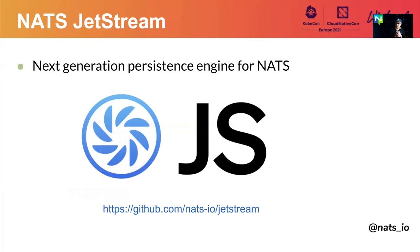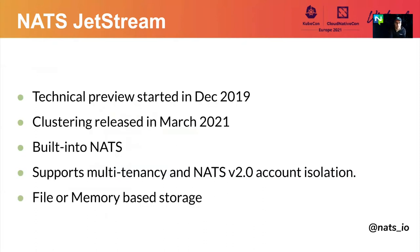As a result, based on all the feedback from the community, we released in the first quarter of 2021 NATS Jetstream, which is the next-generation persistent engine for NATS. You can find all the docs under the GitHub NATS.io Jetstream repo. It was in technical preview in December 2019 at the previous KubeCon. The Jetstream clustering was finalized and the first version got released in March 2021. Unlike NATS Streaming, it is built directly into NATS as a subsystem.